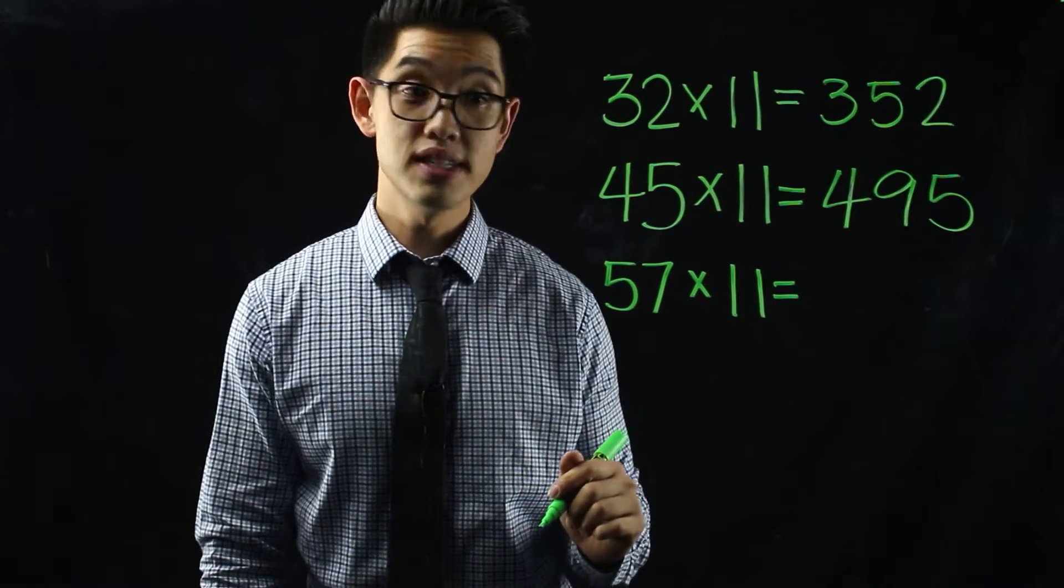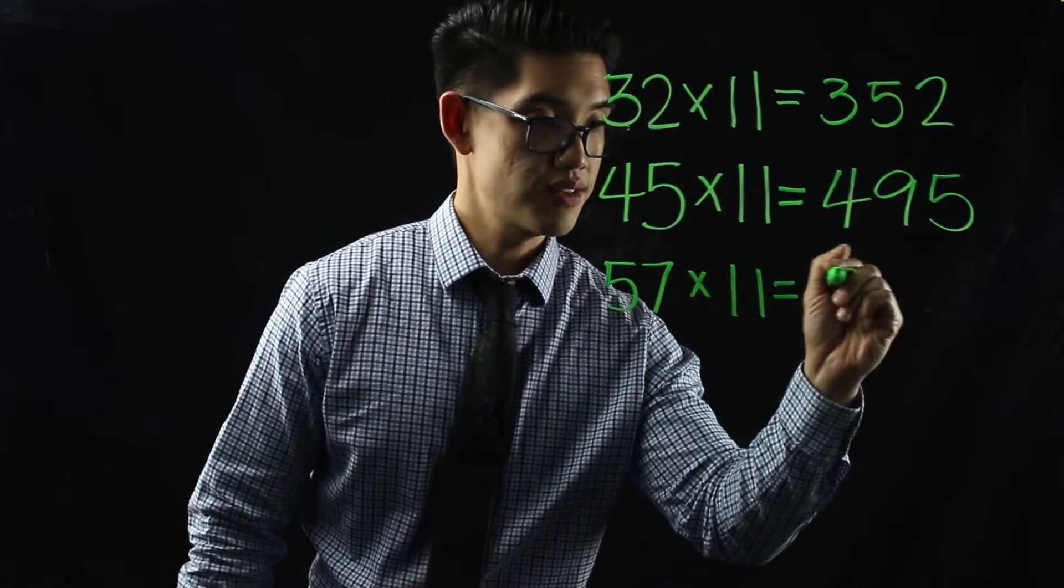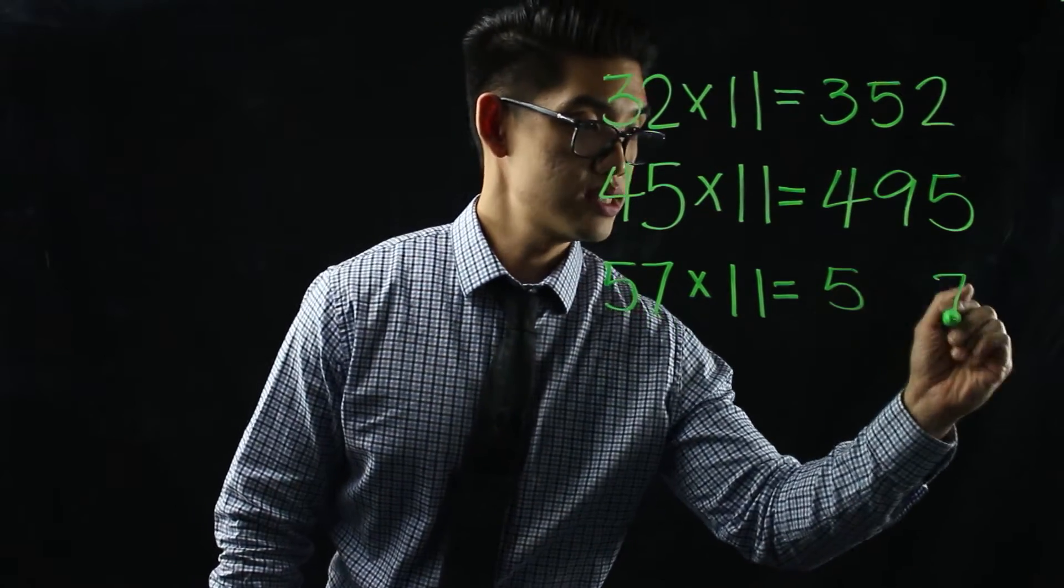If I do the same thing for 57 times 11, this problem is a little bit different. First, I'm gonna write down five because that's the first number. Seven is the second number, I'm gonna write down seven.